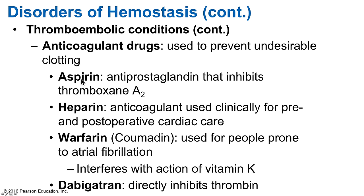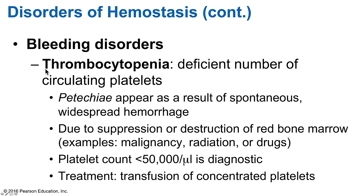Anticoagulant drugs are used to prevent undesirable clotting. Aspirin is an antiprostaglandin drug that inhibits thromboxane A2 formation, blocking platelet aggregation and platelet plug formation. Both heparin and warfarin are anticoagulant prescription drugs. Heparin is injected to inpatients pre- and post-operatively for cardiac care and blood transfusions. Warfarin (Coumadin) is used for outpatients to reduce stroke risk in those prone to atrial fibrillation; it works by interfering with vitamin K activation of certain procoagulants. Dabigatrin is another oral anticoagulant that directly inhibits thrombin, sometimes used as a warfarin alternative.